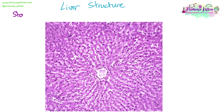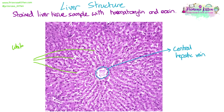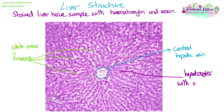You also need to be able to recognise these structures in microscope slides. This is a sample of liver tissue stained with haematoxylin and eosin. The large circular space in the middle is the central hepatic vein in the centre of the lobule. The white areas or spaces are the sinusoids — remember, these are capillaries. All of the purple cells are hepatocytes, and you can see their nuclei are stained darker and look like purple dots.